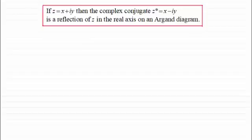In this video I want to introduce you to this idea: if you've got a complex number z equals x plus iy, then the complex conjugate z star, which equals x minus iy, is a reflection of z in the real axis on an Argand diagram.